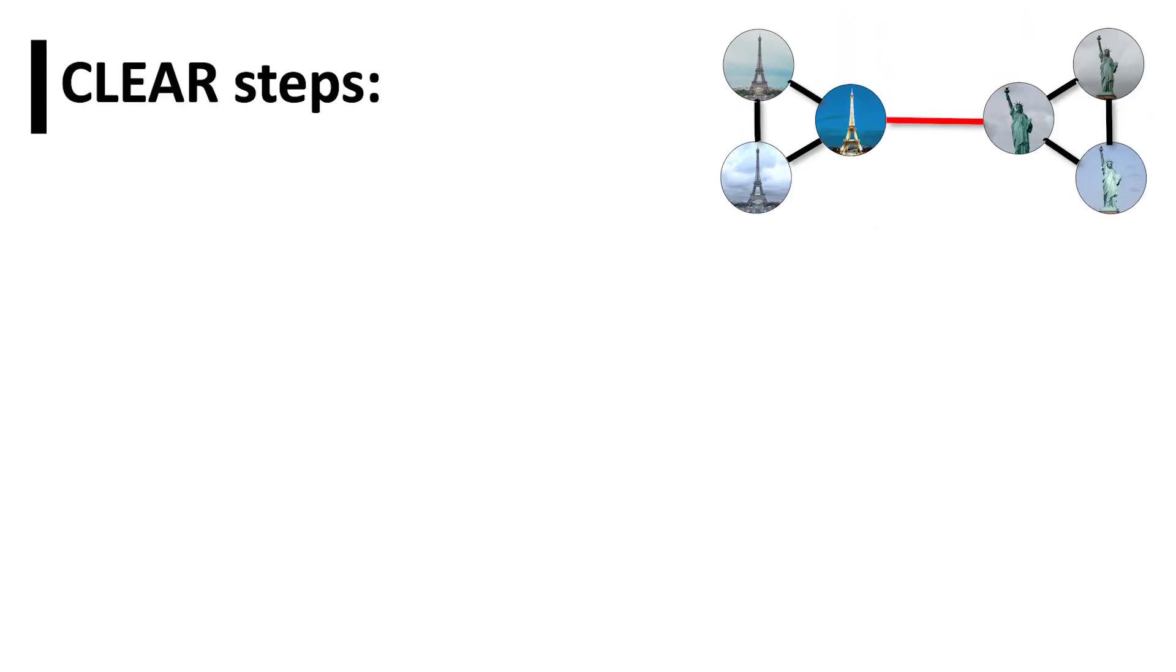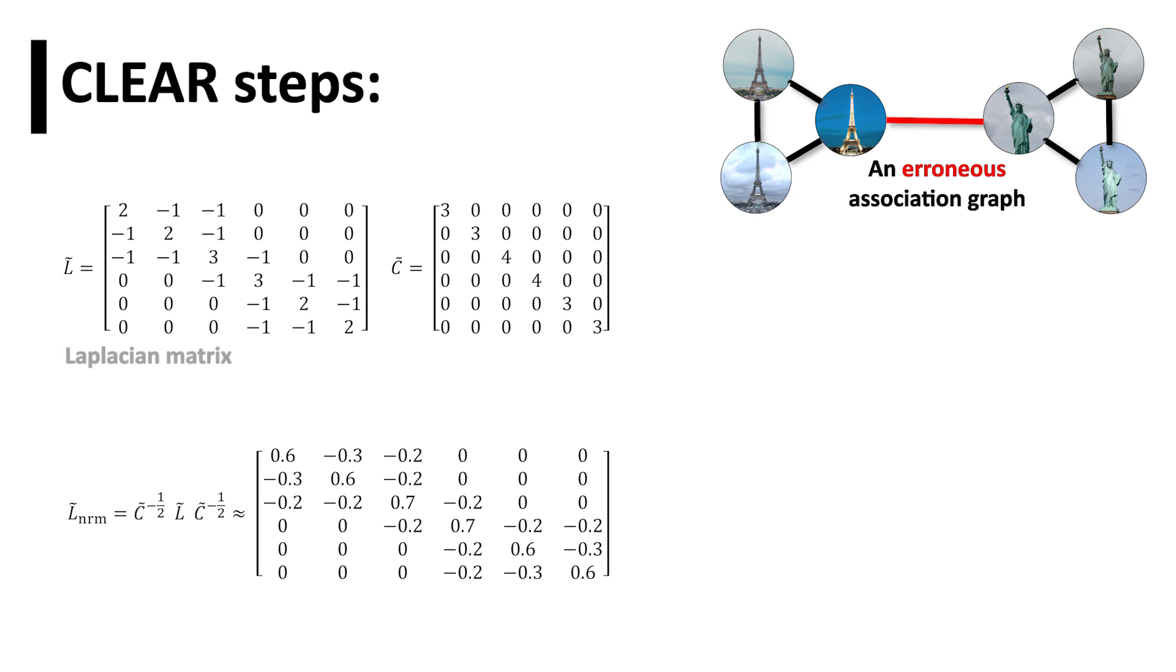Steps of the CLEAR algorithm can be summarized as follows. First, CLEAR computes the normalized Laplacian of the association graph, its eigenvalues, and eigenvectors.